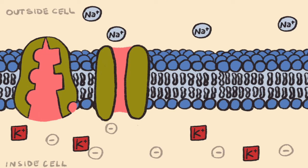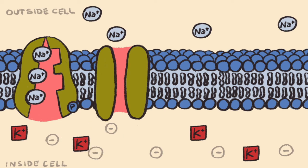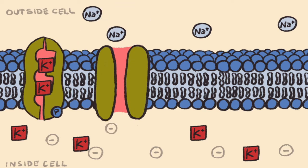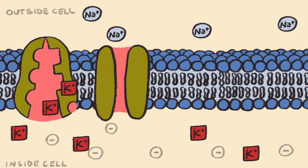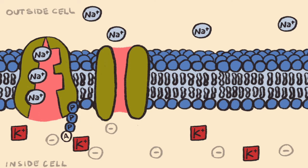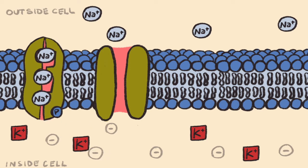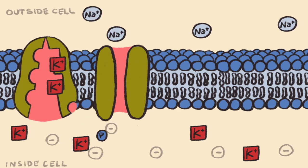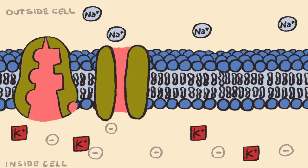Throughout the rising phase, sodium-potassium ATPase pumps and potassium leak channels continue to function as normal — the ATPase pumps move three sodium ions out of the neuron in exchange for two potassium ions being moved into the neuron, while potassium leak channels allow potassium ions to leak out of the neuron, only to be pumped back in. Despite both working to maintain a negatively charged membrane potential, they absolutely cannot match the sheer magnitude of what happens during the rising phase.